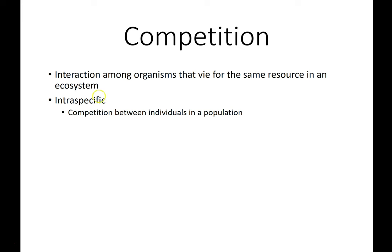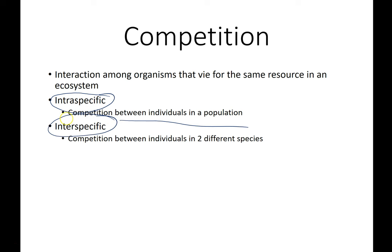The two types of competition we'll talk about are intraspecific — between individuals within a population, which is a group of the same species. That could be like two elk fighting over a female. And interspecific would be two different species competing for a similar resource. For example, out in your grass you've got competition between your grass, clover, dandelions, crabgrass, and bermudagrass — they're all competing for nutrients in the soil, for space, and for water. Because they're different species, we call that interspecific.